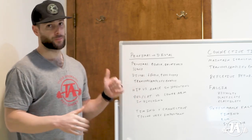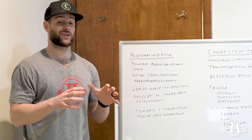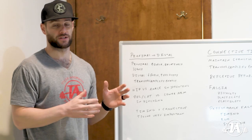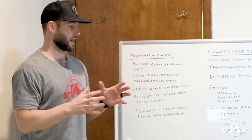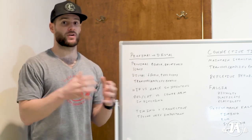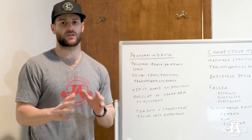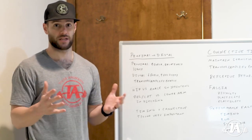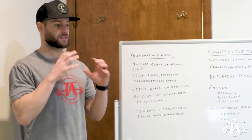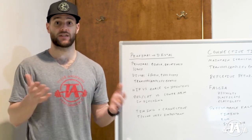Two other important factors related to fascia are proprioception and force transmission. On the proprioception side, there are ten times the sensory receptors in your fascia than in muscle. If we don't train fascia properly, there are implications for how good your movement is, your adjustability, and other factors important to throwing a baseball effectively. On the force transmission side, connective tissue helps transmit force throughout the body — this is the whole concept behind Thomas Myers' Anatomy Trains.